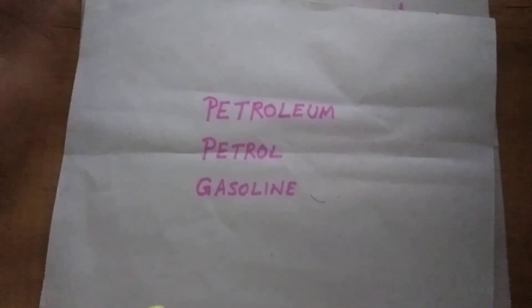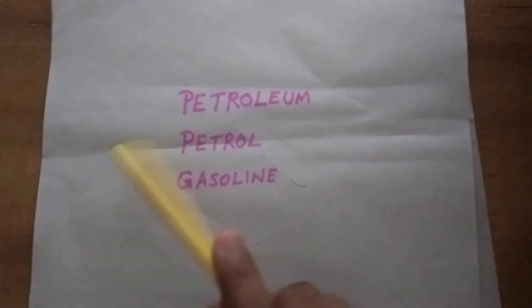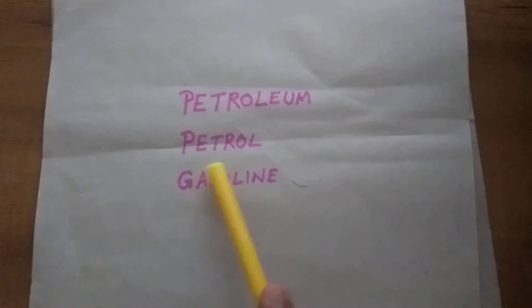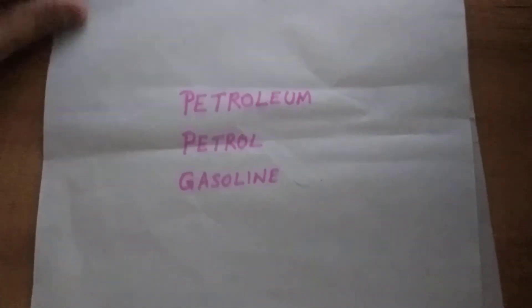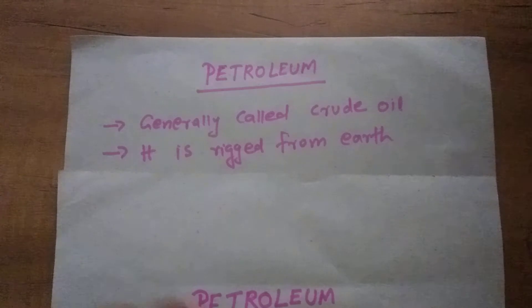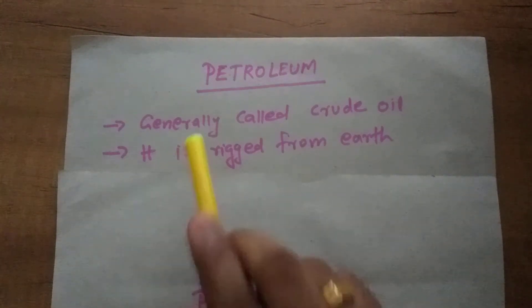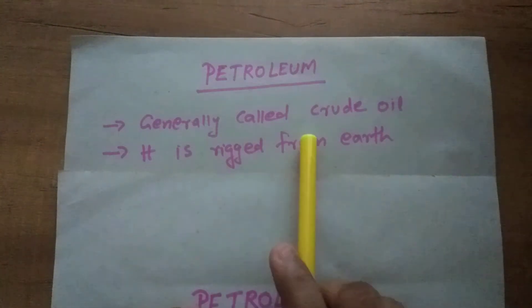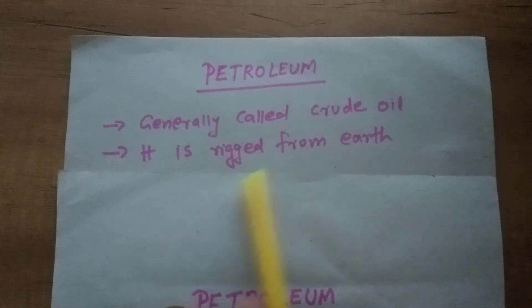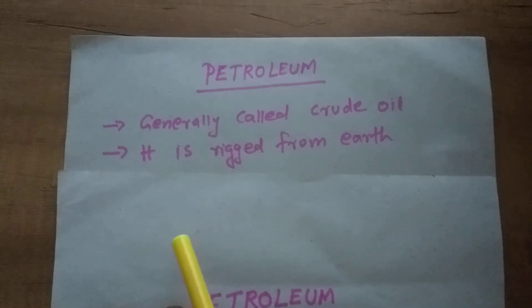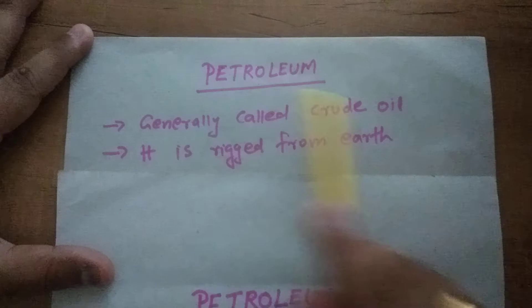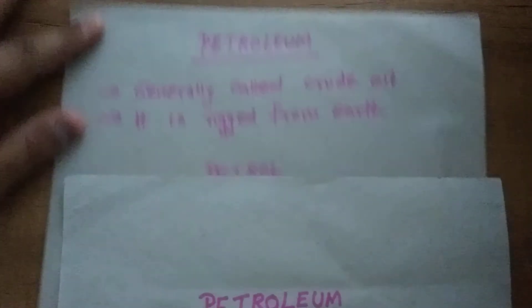Today's topic: what is petroleum, what is petrol, and what is gasoline? Petroleum is generally called crude oil. The crude oil is rigged from the earth.